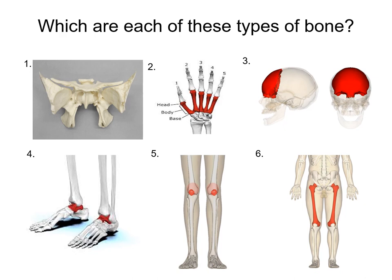Now that you're ready to go over the answers, number one is a really weird looking bone — that's your sphenoid bone. Weird butterfly, bat-looking thing. That bone is definitely not long, definitely not short, and it's definitely irregular. That is an irregular bone — it's probably the epitome of irregularness. I'll put IR for irregular.